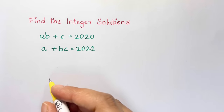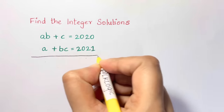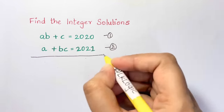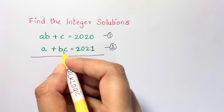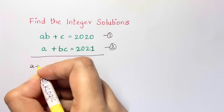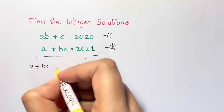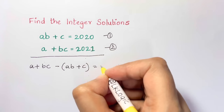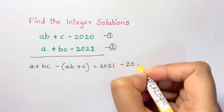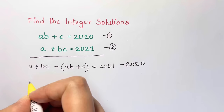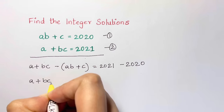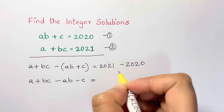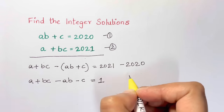Let's start with subtraction. Let this be equation one and let this be equation two. Now let's subtract equation one from two. So we have a + bc minus (ab + c) equals 2021 minus 2020, which gives us a difference of 1.